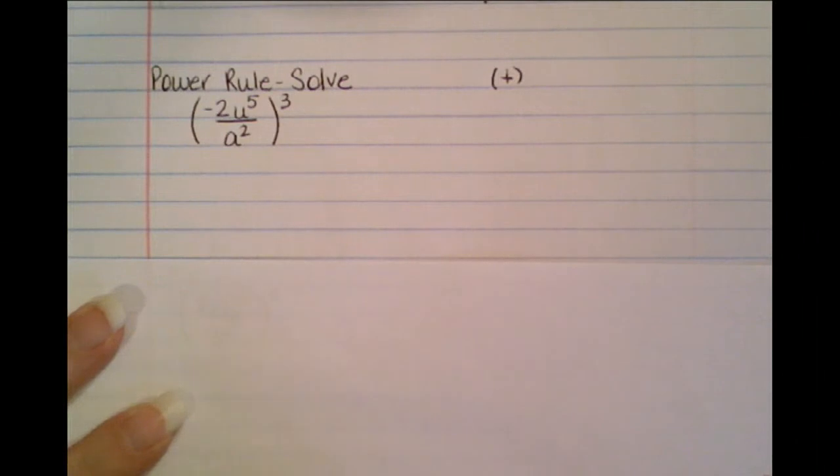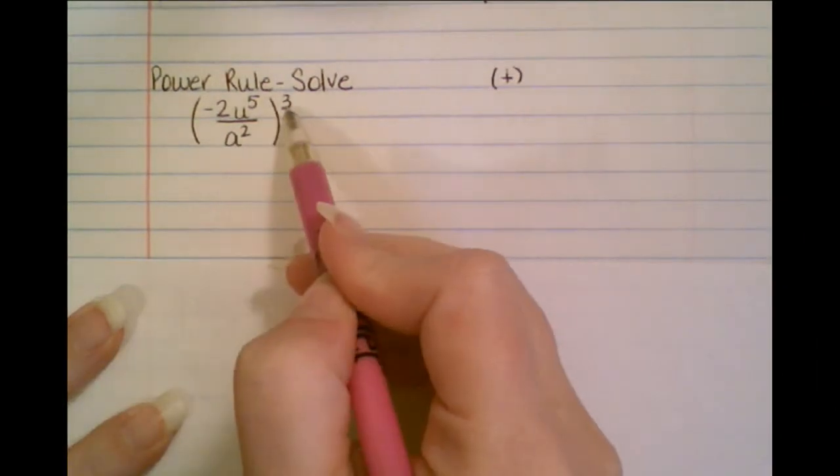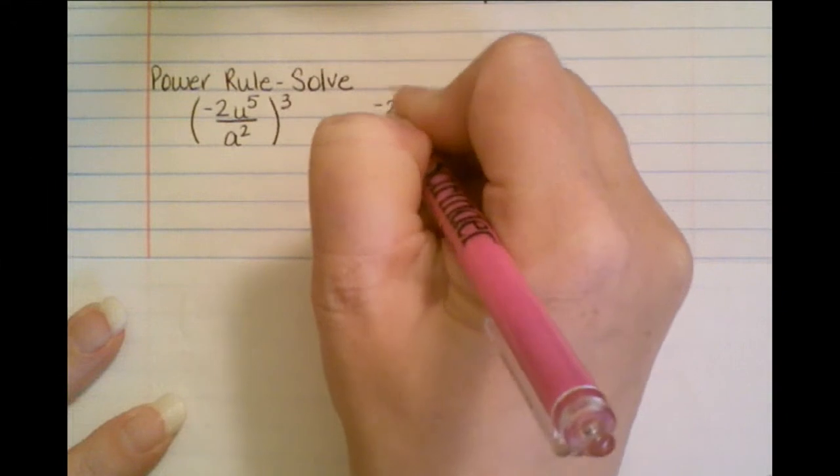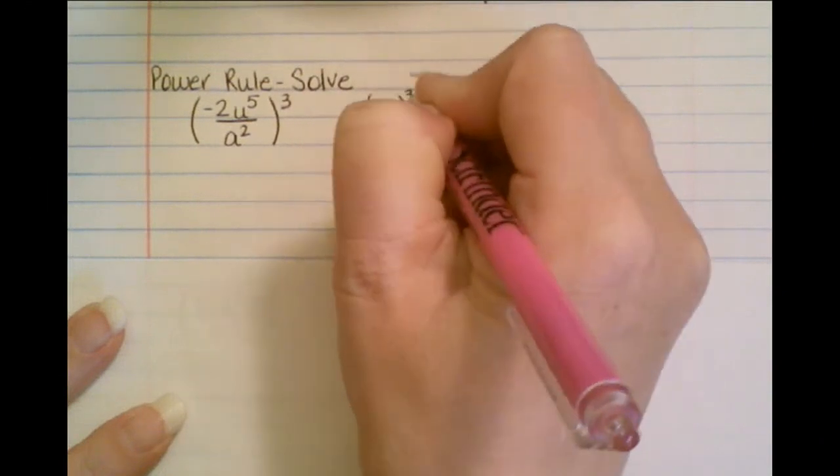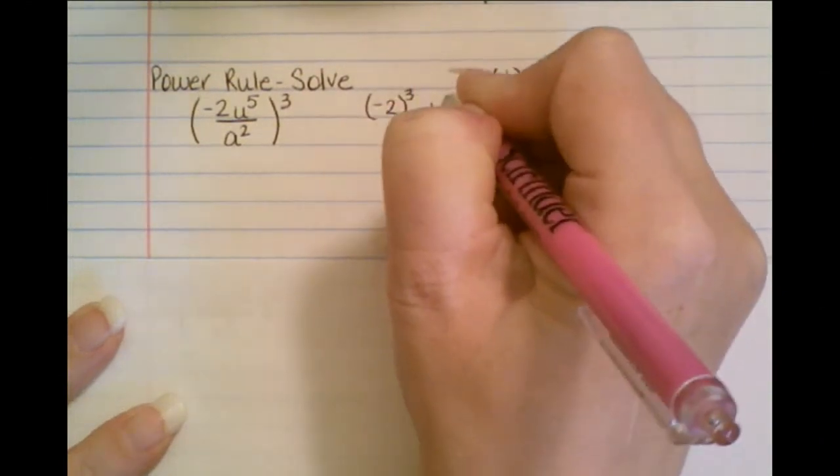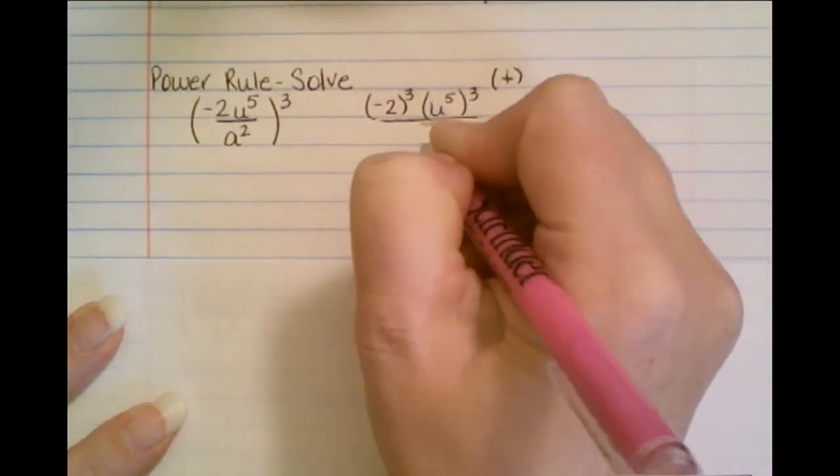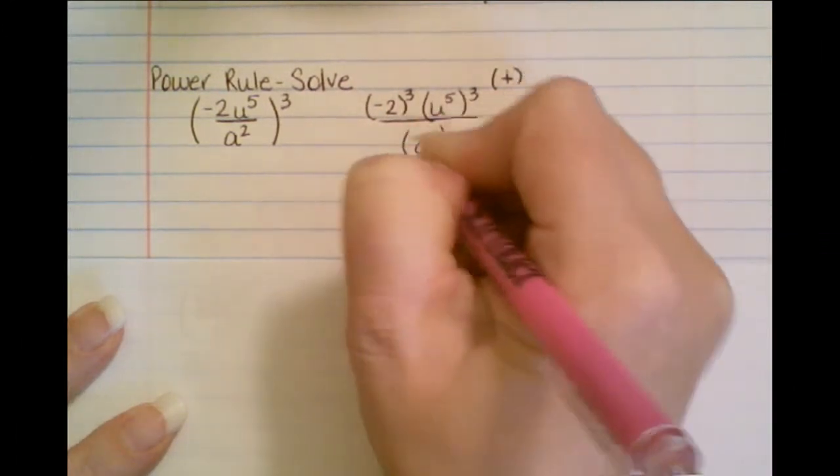So if I want to simplify this, remember this is saying I'm going to cube everything that I see. So I'm going to take negative 2 and I'm going to cube that. I'm going to take u to the 5th cubed, and then I'm going to have a squared cubed.